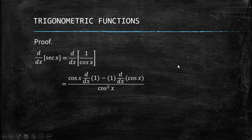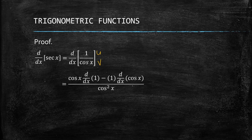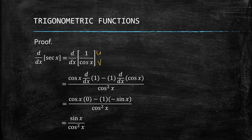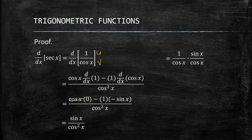Setting u = 1 and v = cos(x), the quotient rule gives us [cos(x)·(derivative of 1) − 1·(derivative of cos(x))] all over cos²(x). The derivative of 1 is 0, and the derivative of cos(x) is −sin(x). So cos(x)·0 = 0, and −1·(−sin(x)) = +sin(x), giving sin(x) / cos²(x).